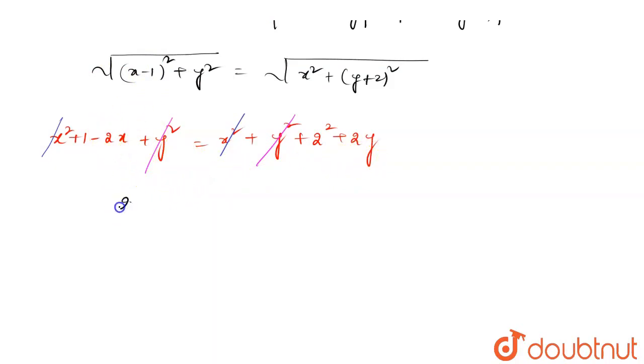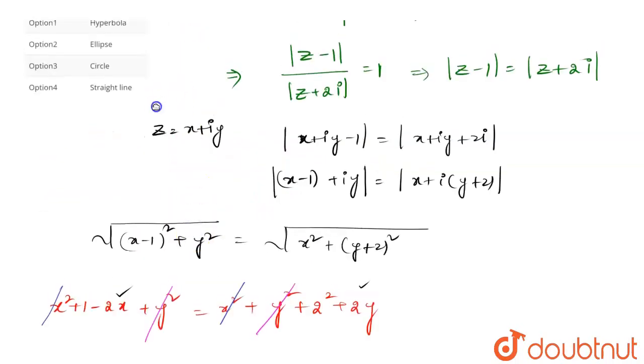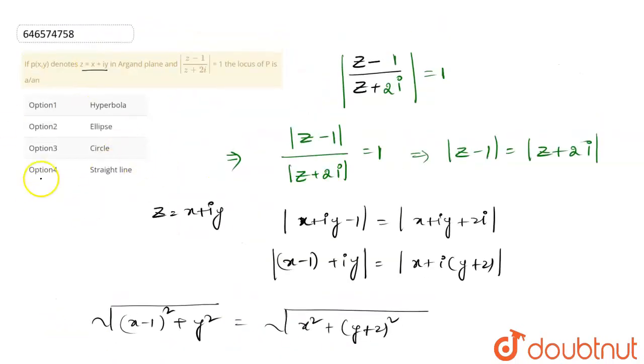So this simplifies to x equals 0. This is the locus, which is a straight line. x equals 0 form, so our option will be straight line. This is the answer.